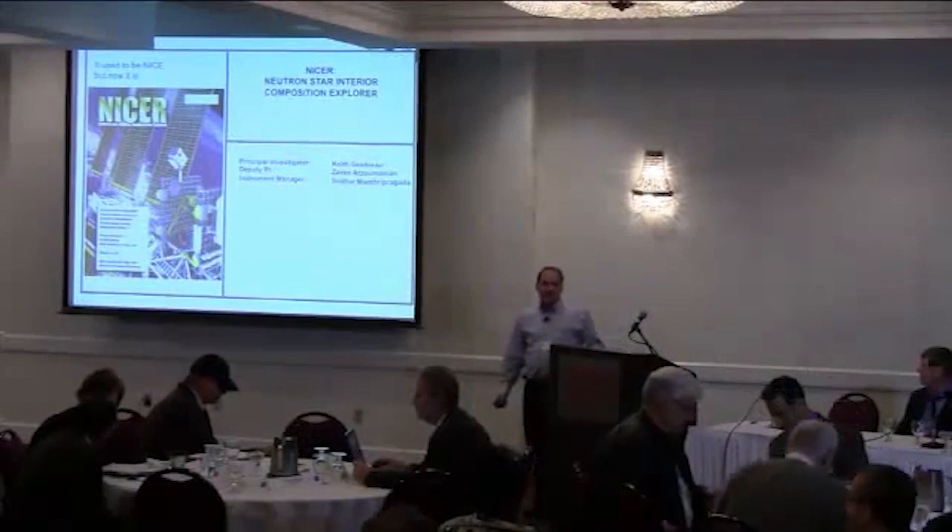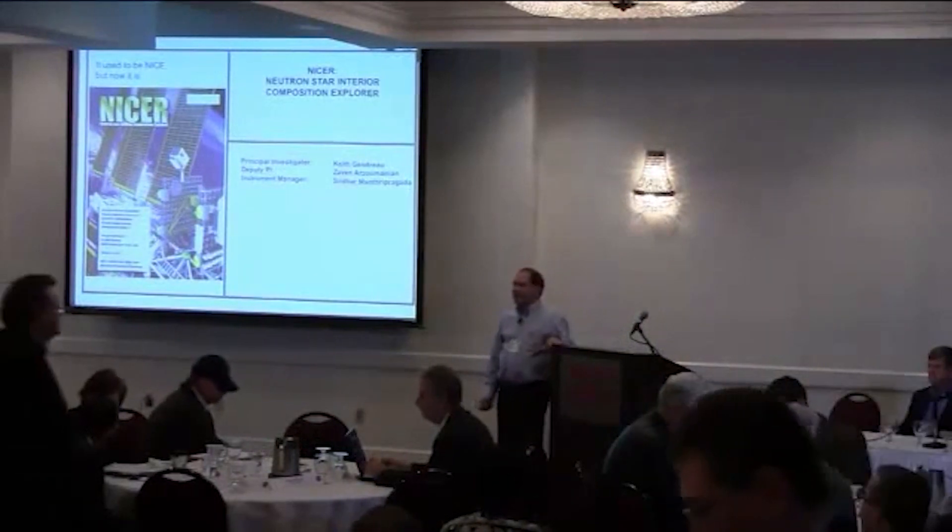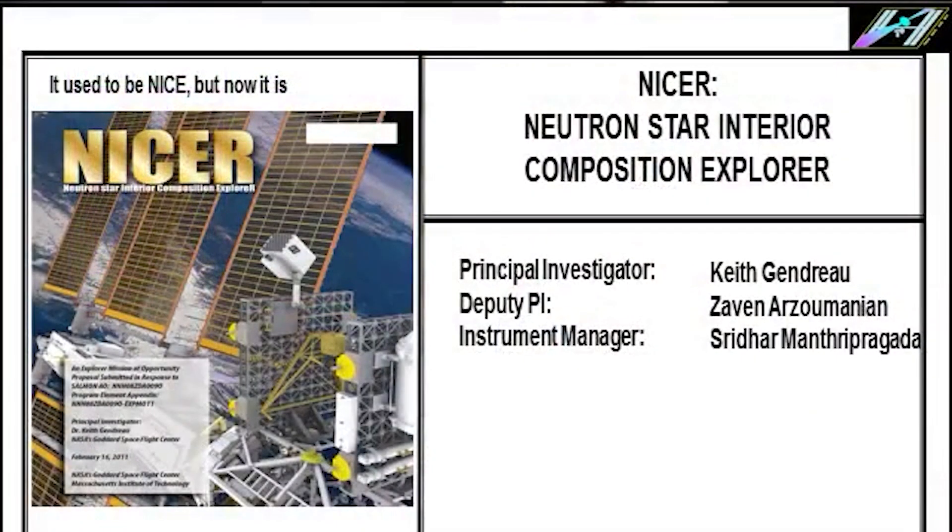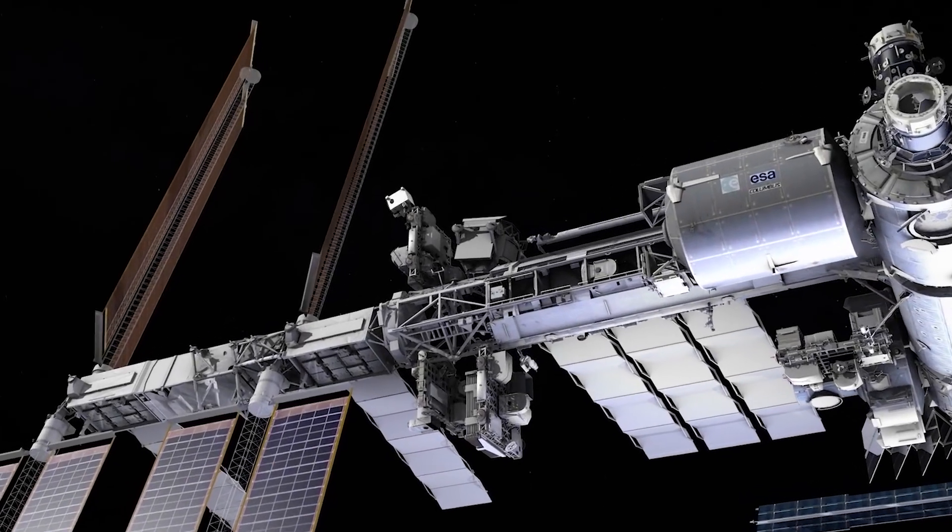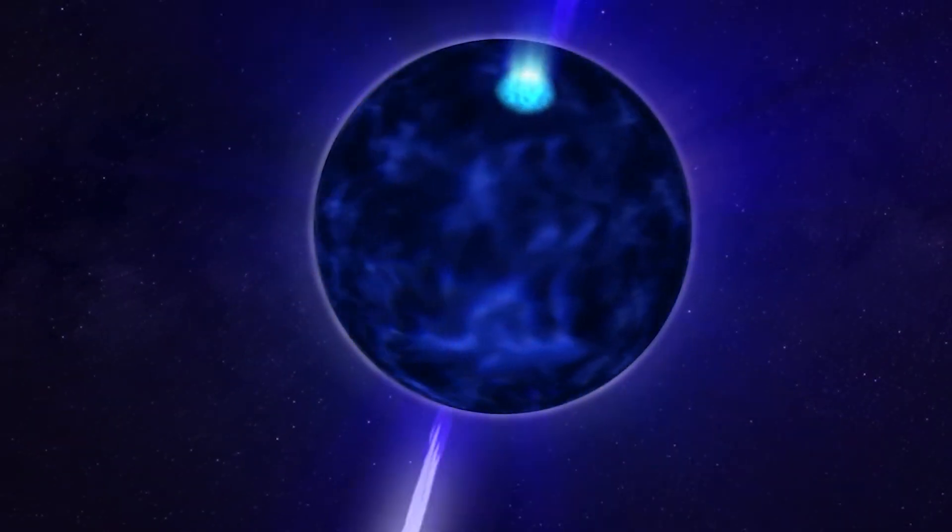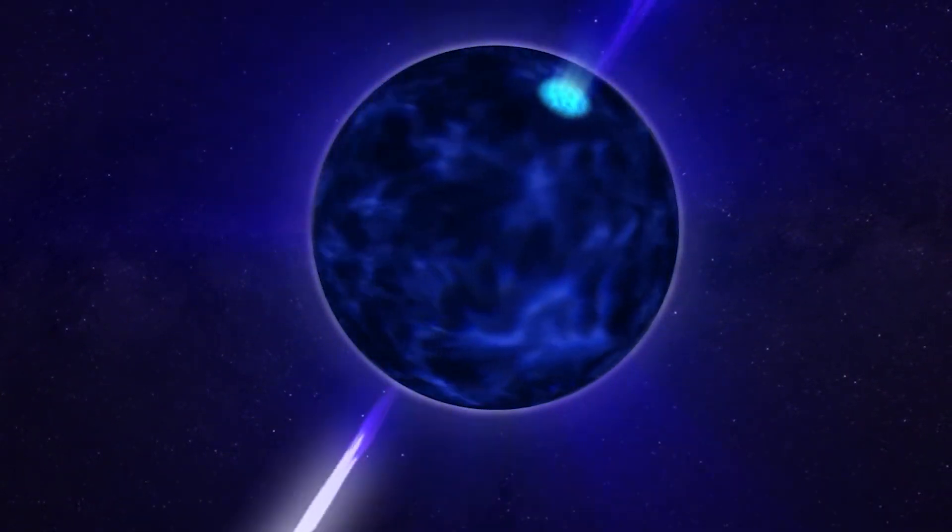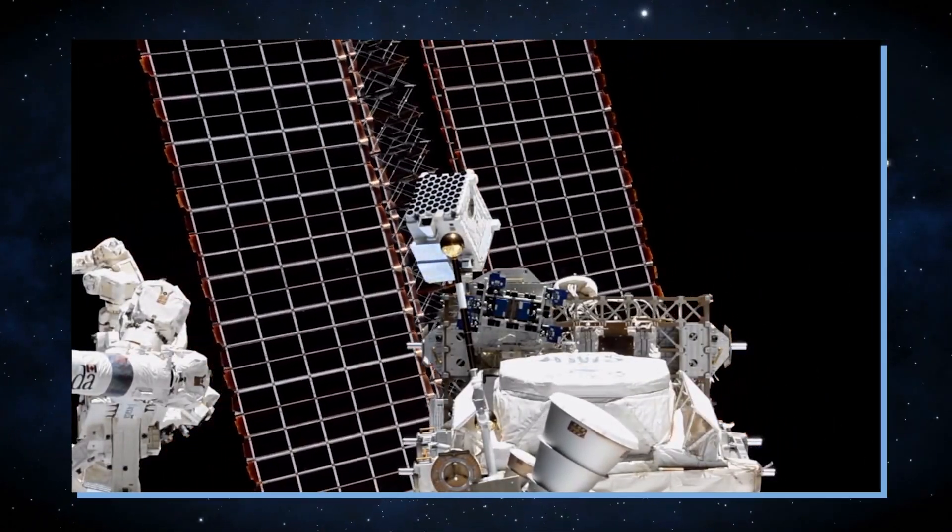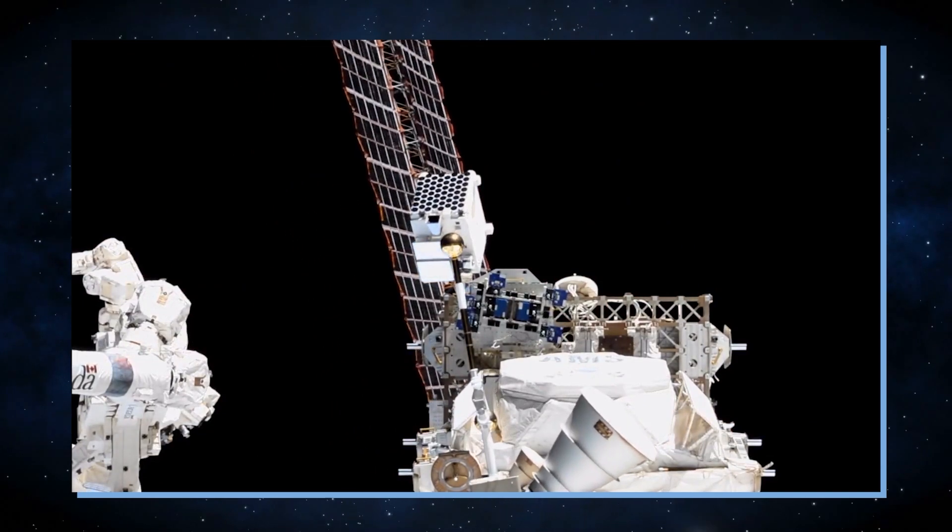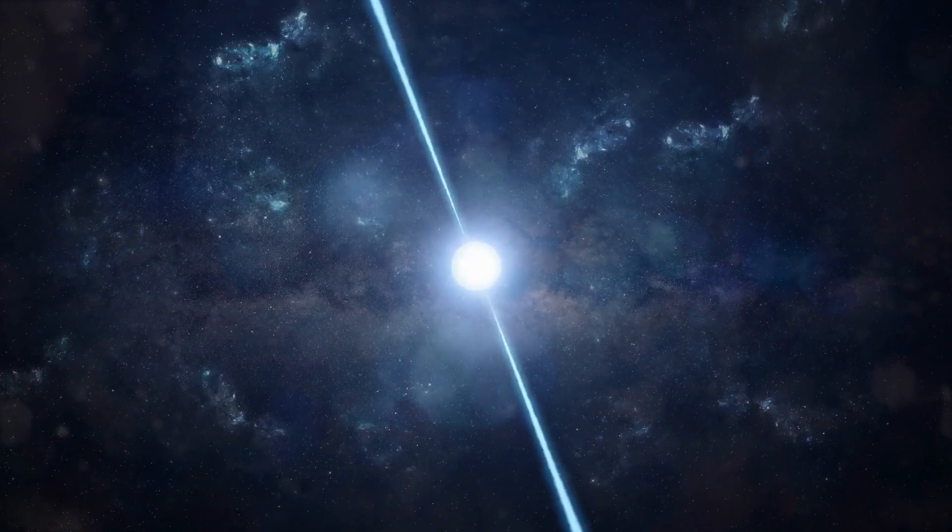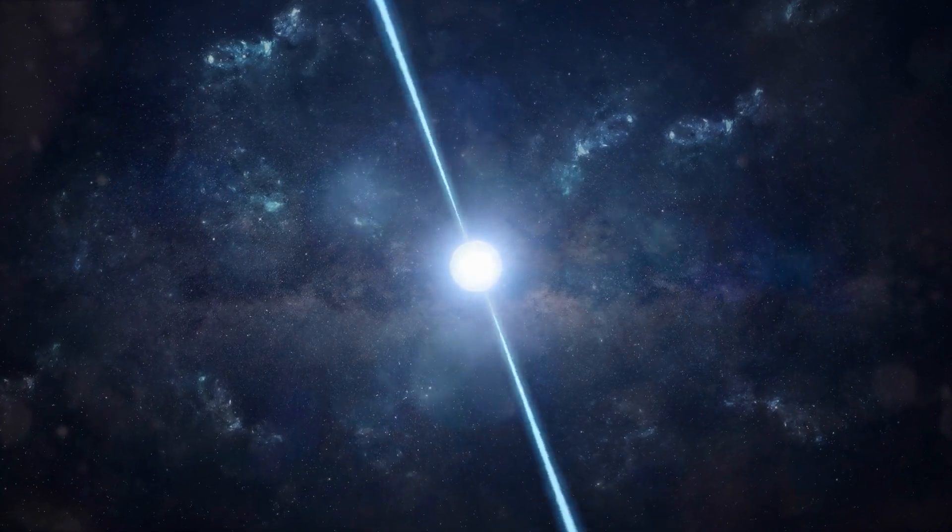In pursuit of answers to this cosmic puzzle, astronomers deployed the Neutron Star Interior Composition Explorer, NICER, to the International Space Station in 2017. NICER's primary mission is to investigate the internal composition of neutron stars. Thus far, the instrument has enabled astronomers to make precise measurements related to the size and density of these enigmatic celestial bodies, offering valuable insights into the nature of neutron stars, and by extension, magnetars.